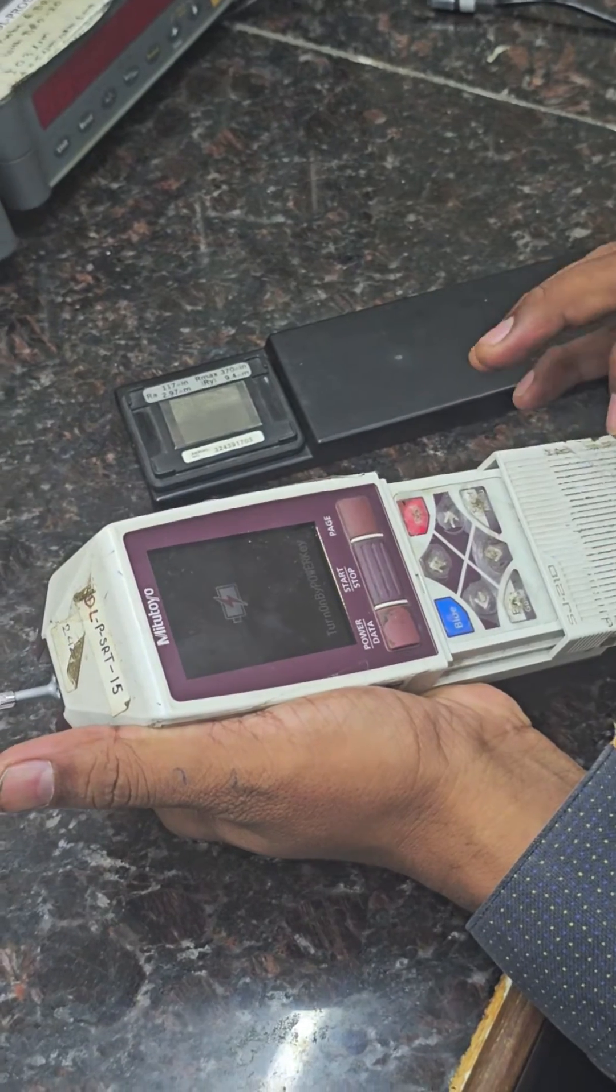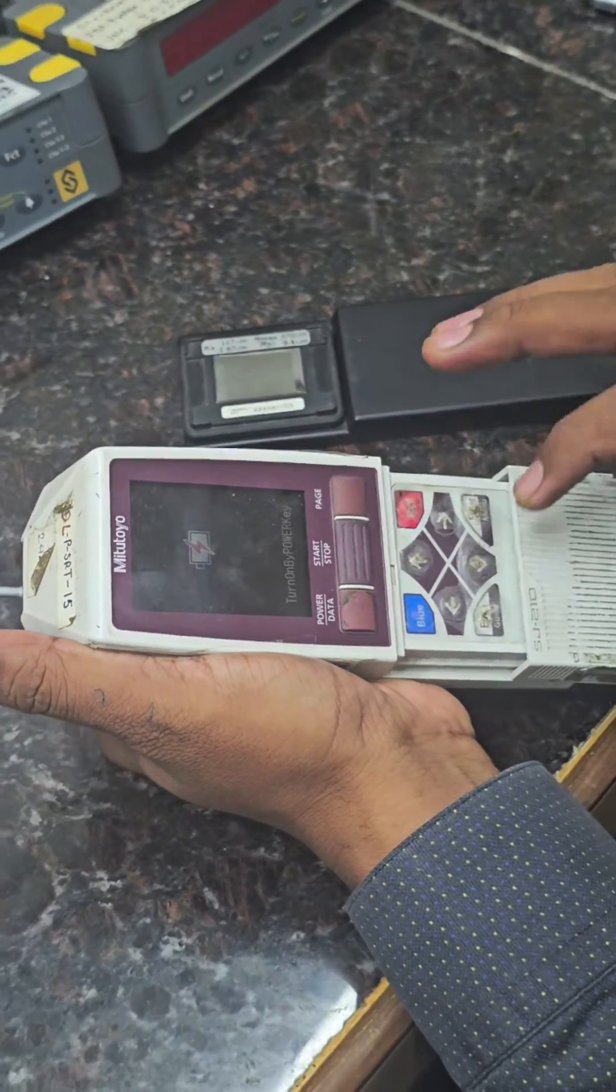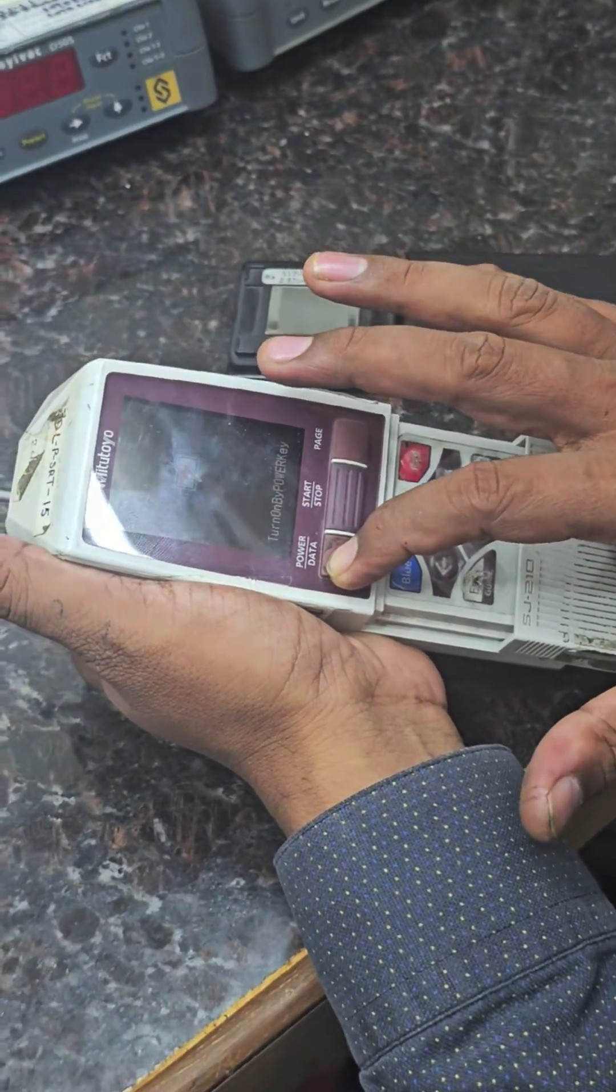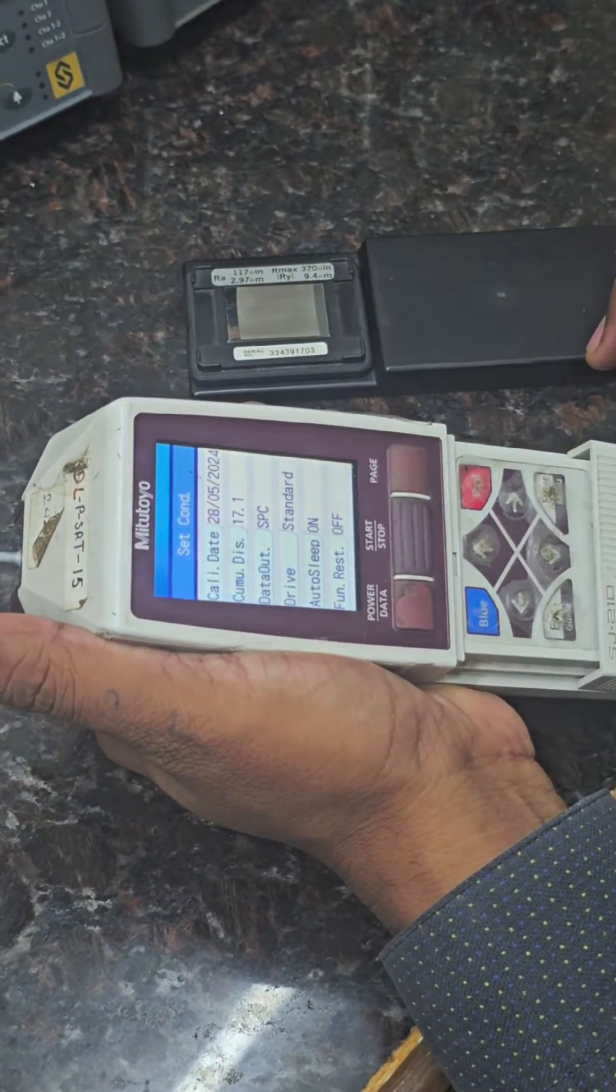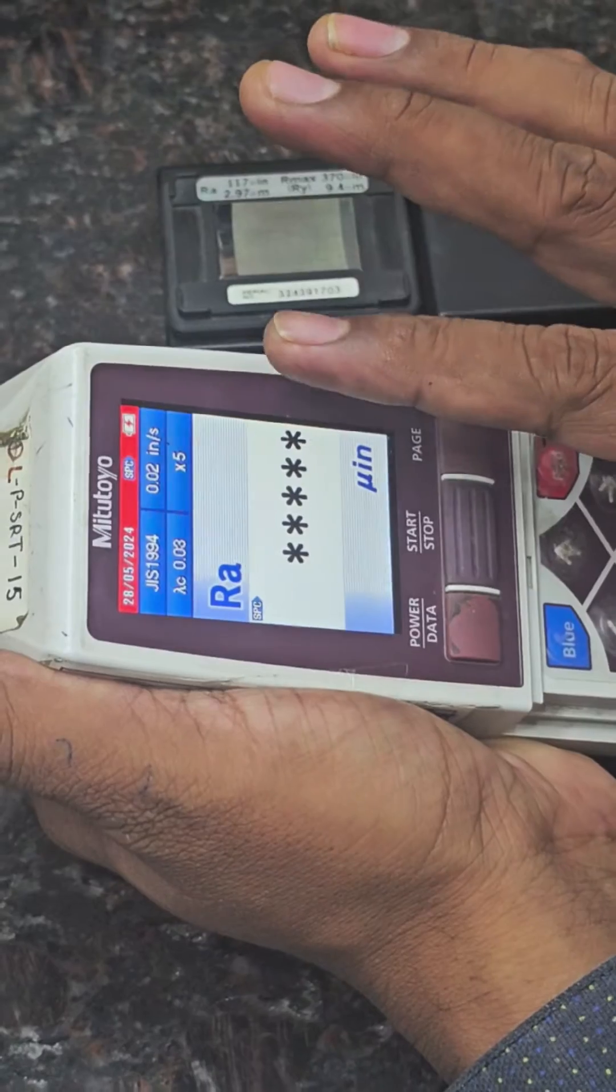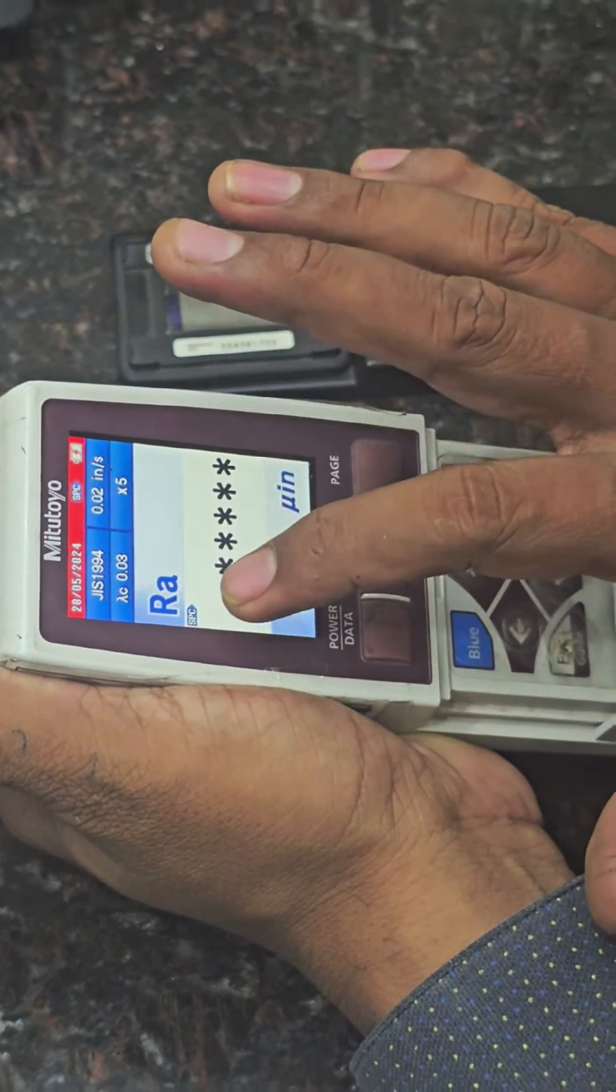This is the slider of the roughness tester hz210. This is the power on button. Press the power on button and wait for the screen to come to RA.